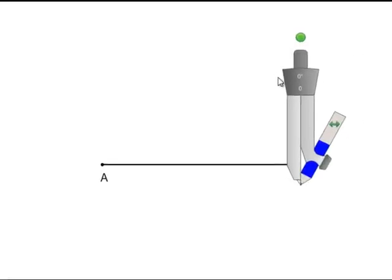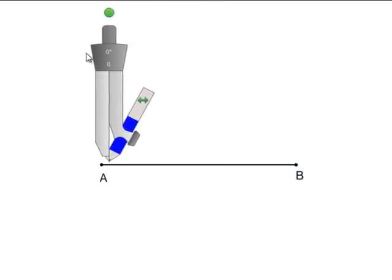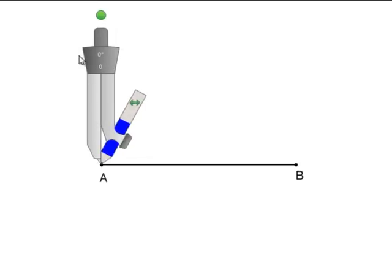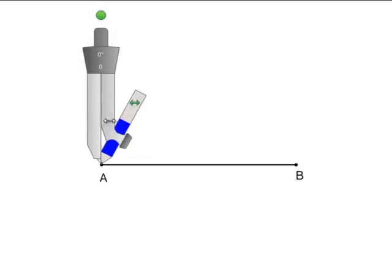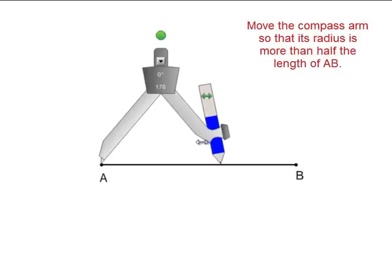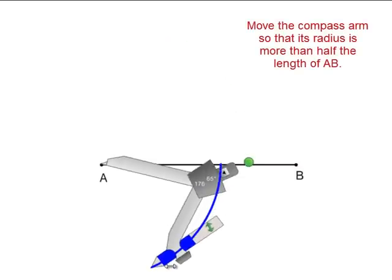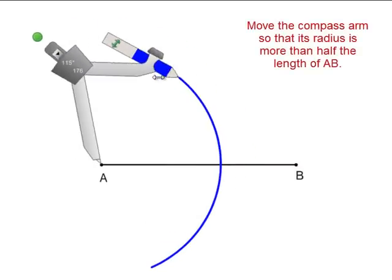First, I'll have a segment that I'm going to find the perpendicular bisector of. I'll place my compass point on point A and open the arm of the compass so that its radius is more than half the length of AB.